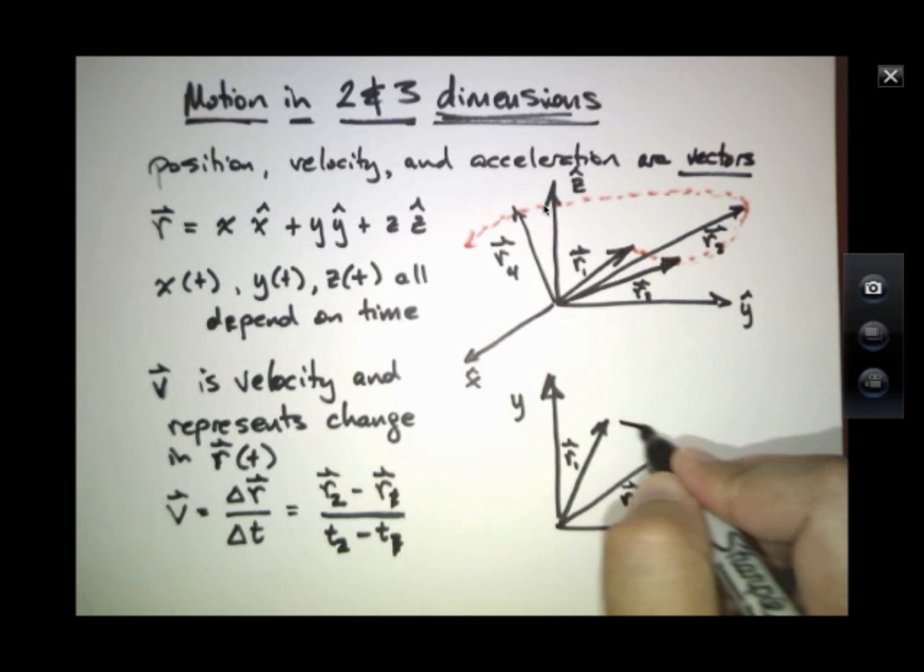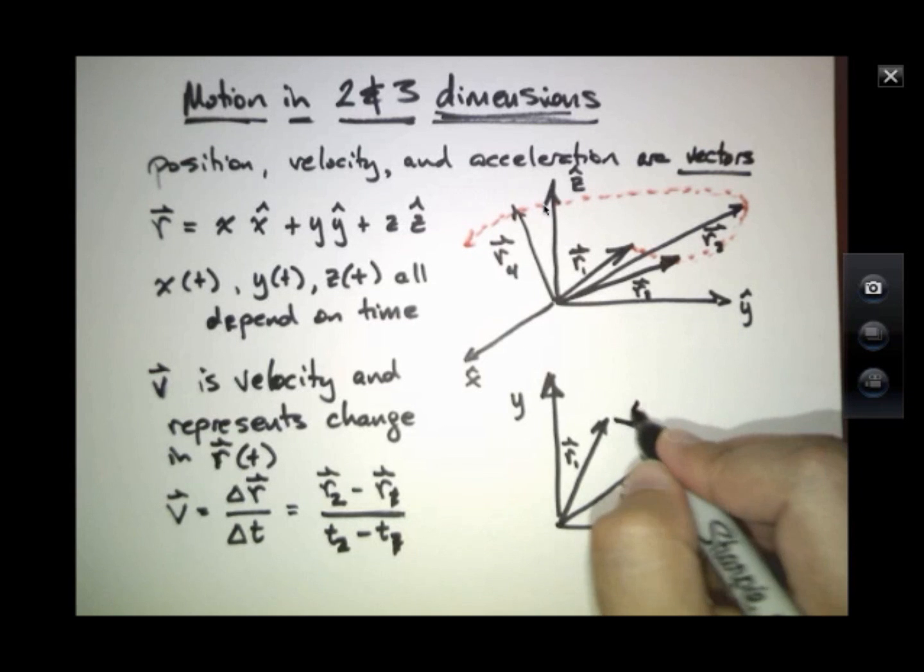And where does delta R point? Delta R points from the tip of one vector to the tip of the other.